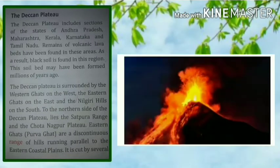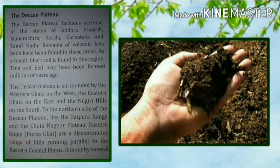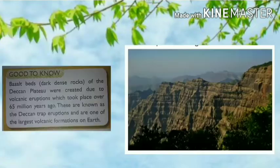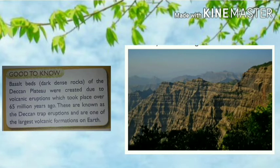The remains of volcanic lava beds have been found in these areas. As a result, black soil is found in this region, and this soil bed may have been formed millions of years ago. The basalt beds, which are dark dense rocks of the Deccan Plateau, were created due to volcanic eruption that took place over 65 million years ago. These are known as the Deccan Trap eruptions and are one of the largest volcanic formations on Earth.